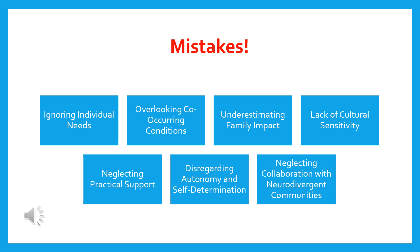The next possible mistake is neglecting collaboration with neurodivergent communities. Engaging with neurodivergent communities and organizations can provide valuable insights and perspectives. Collaborating with these communities gives us a better understanding of the needs and experiences of neurodivergent individuals, and allows us to incorporate their voices into therapy approaches and practices. By being aware of these potential mistakes and actively working to avoid them, we as therapists can ensure that our practice of neurodiversity in family therapy is sensitive, inclusive, and effective in supporting the well-being and growth of neurodivergent individuals and their families.